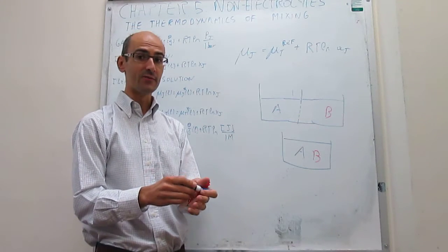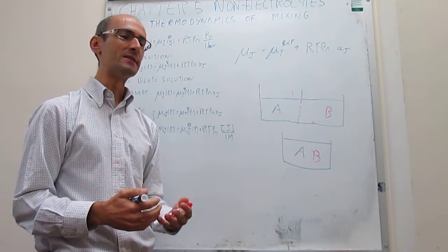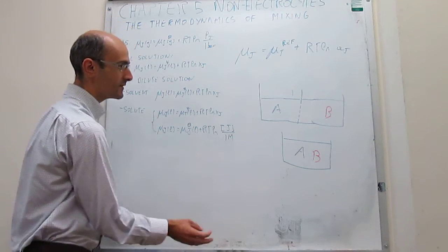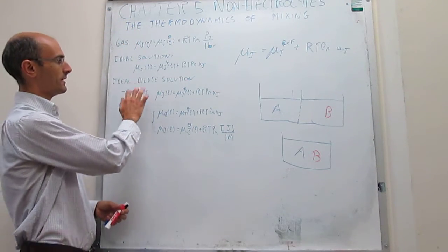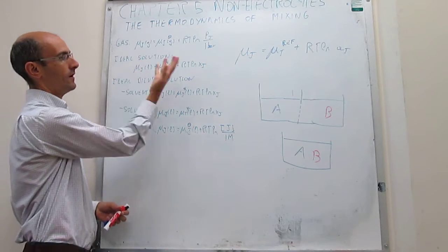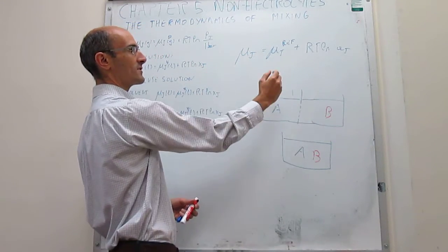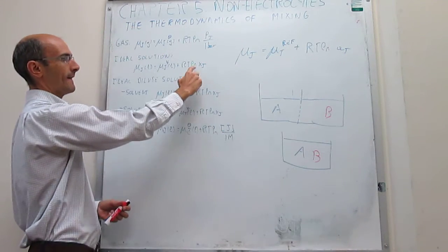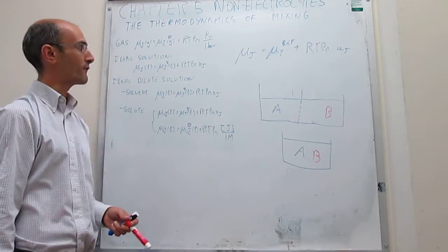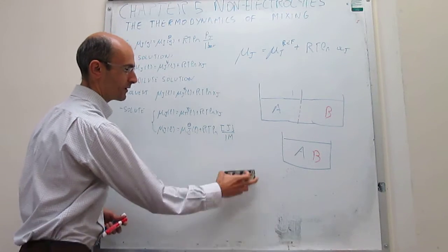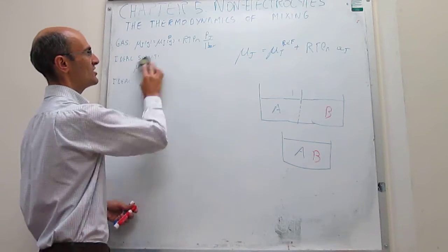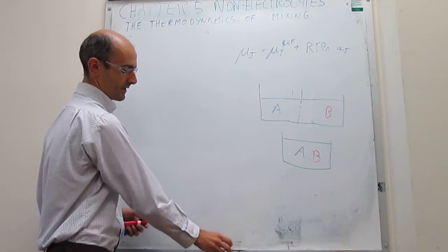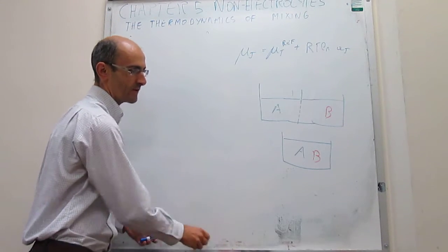Obviously the answer is that yes, the mixing will be spontaneous, but we can see how that is borne out by our thermodynamics work. This is going to be an ideal solution, so we're going to use the ideal solution case. For an ideal solution, the reference is the pure substances, and the activity can be replaced by the mole fraction of each component. To calculate spontaneity, we calculate the change in Gibbs energy — at constant temperature and pressure, the change in Gibbs energy is the predictor of spontaneity.